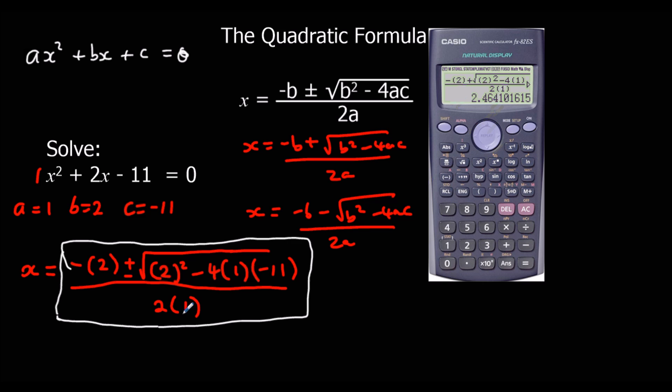So this is our first answer here. So for our plus, we get 2.46 to 3 significant figures.